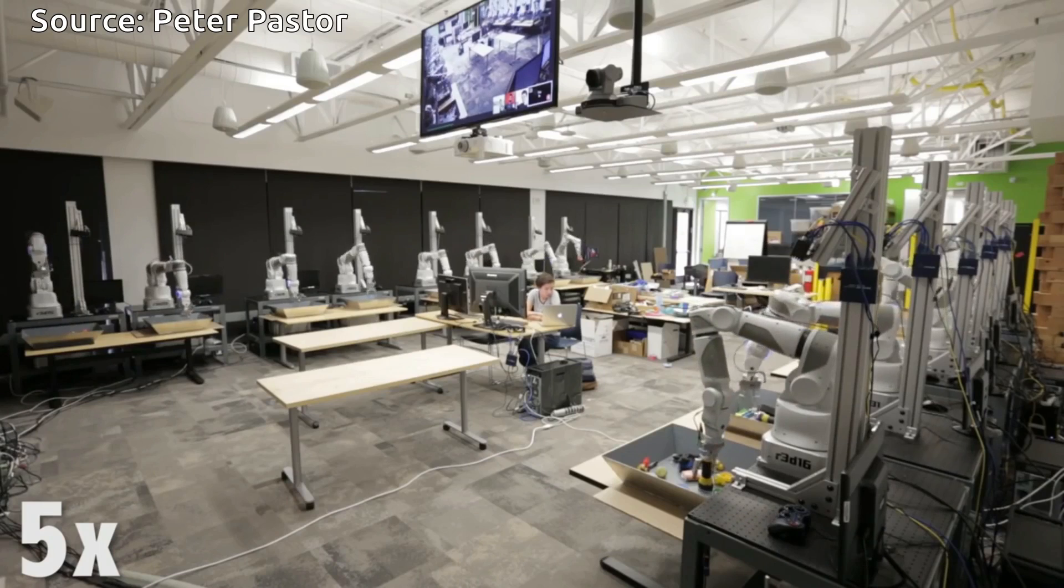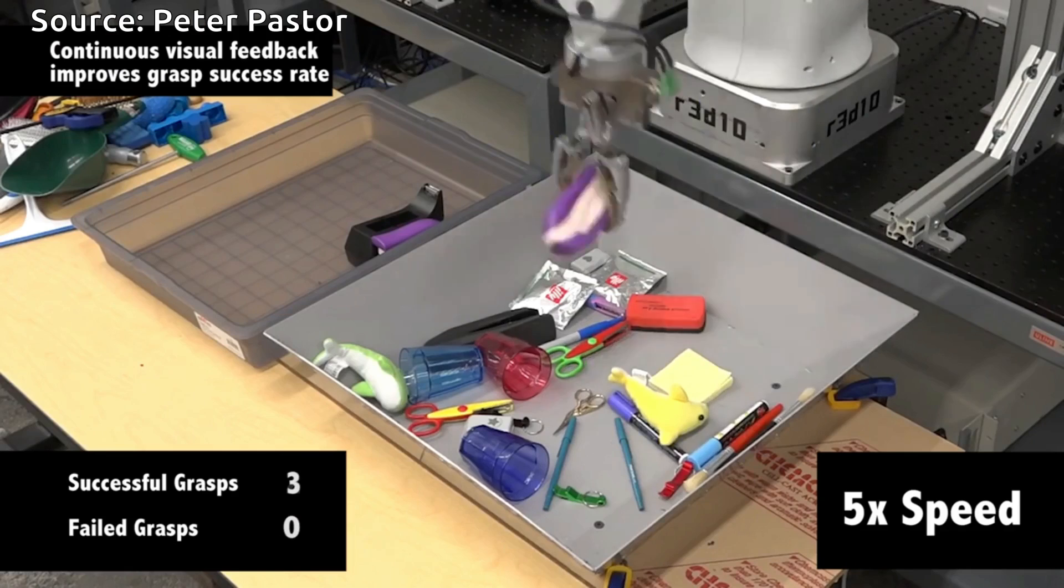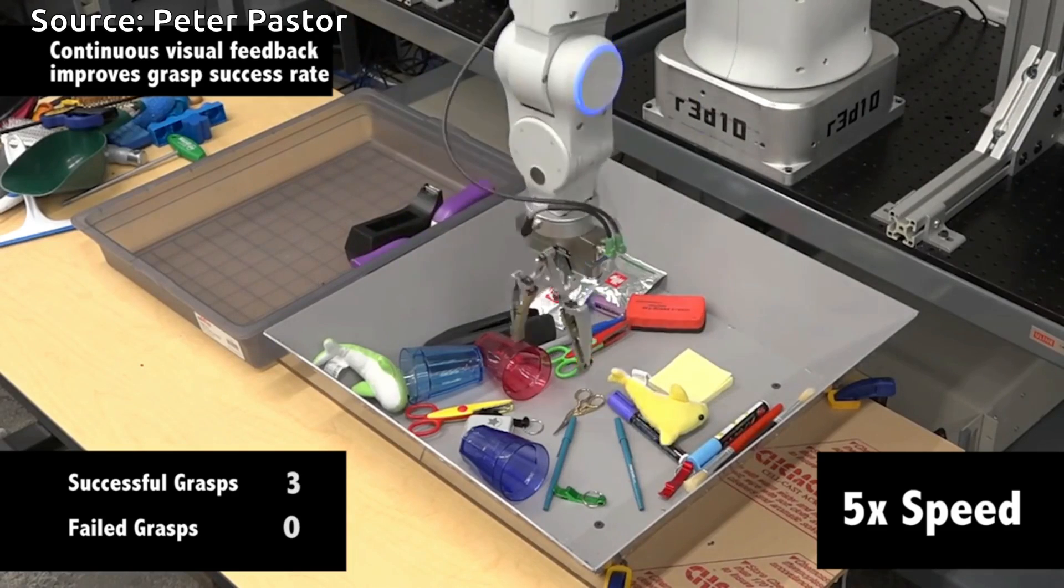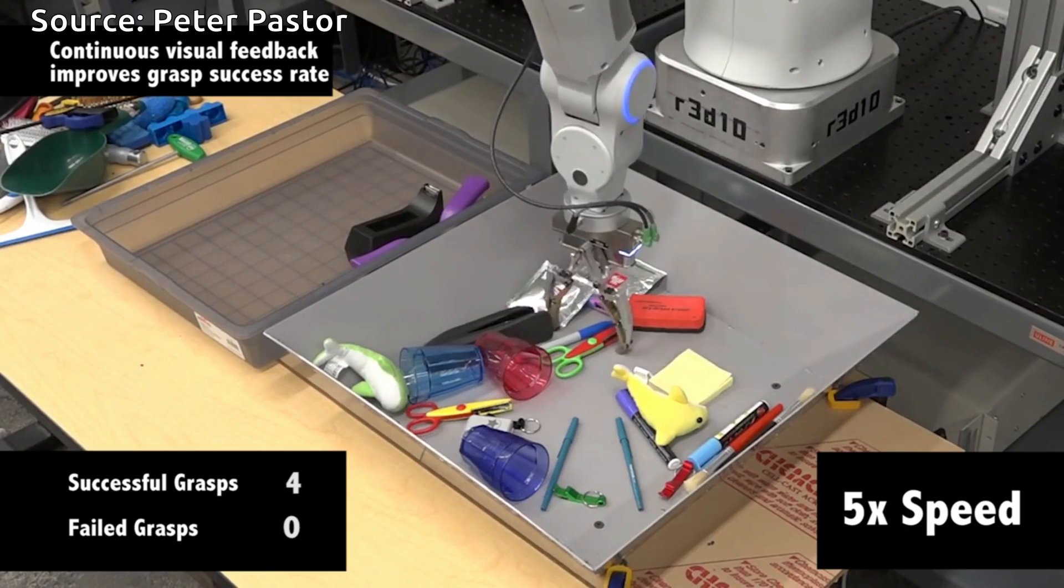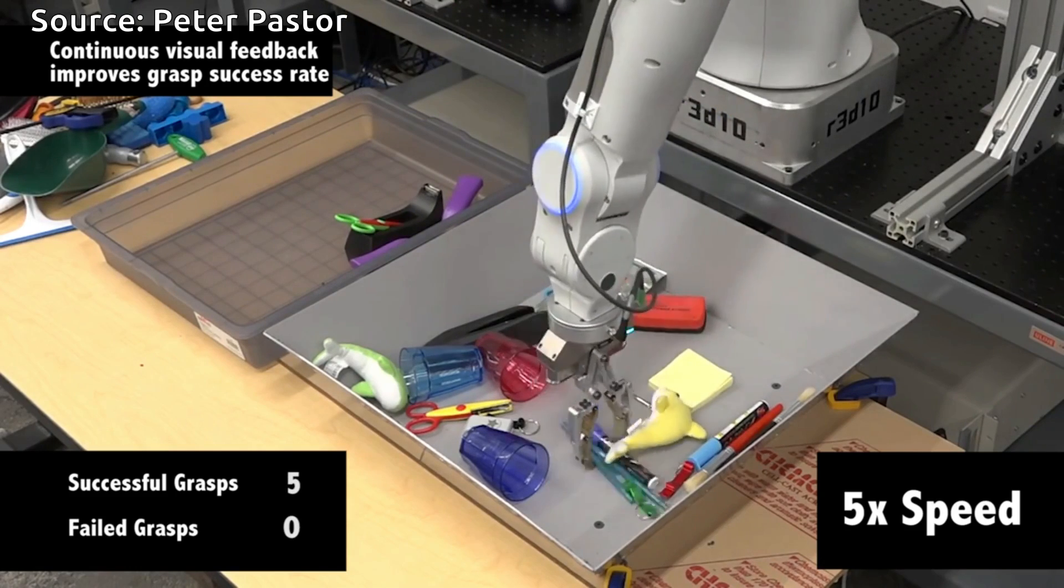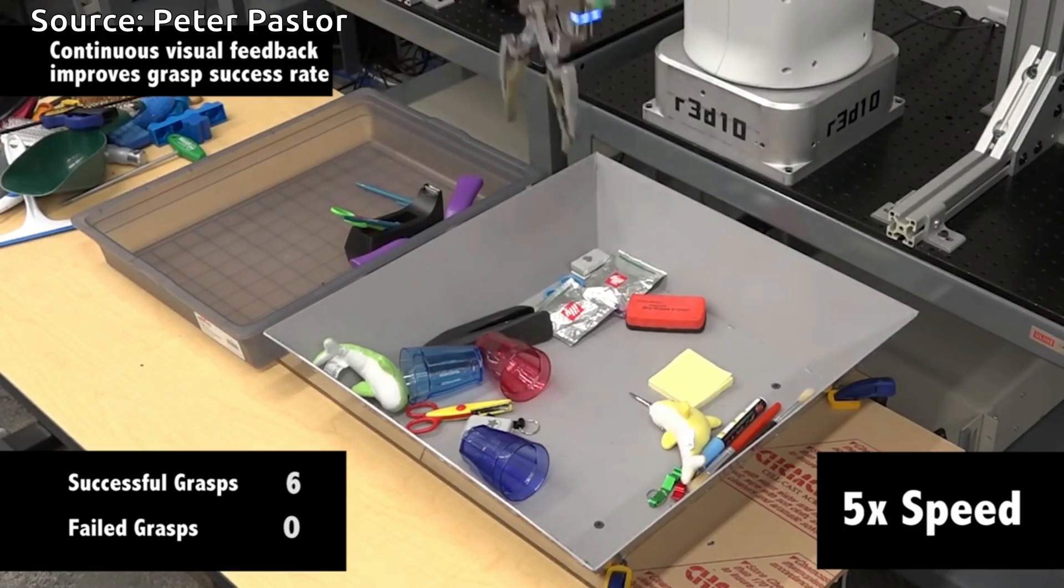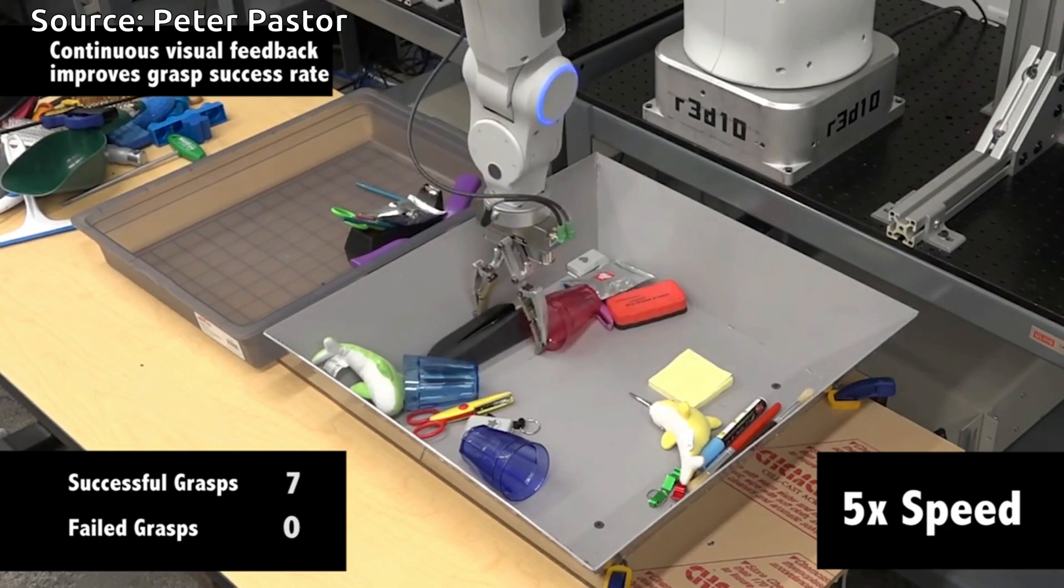Google research scientists are working on implementing this concept. While initially the grasps are executed at random and succeed only rarely, each day the latest experiences are used to train a Deep Convolutional Neural Network to learn to predict the outcome of a grasp, given a camera image and a potential motor command.